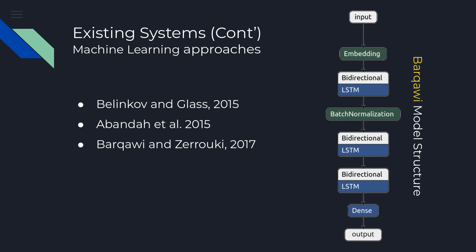Belenkov's model performed poorly on the testing dataset, probably because it was trained on Arabic Treebank only, and further work is needed to make it better. As for Abanda's work, it's not available to test — neither open-source nor closed-source. So Fadel 2019 only compared the Shakkala system by Barqawi and found that it does a much better job in diacritization.